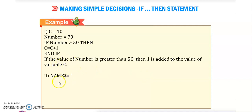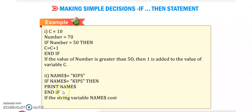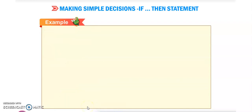This is the remark. Next example: name dollar equals to 'kips'. If name dollar equals to 'kips', then it will print the name variable. The value of name is 'kips', and the string variable name contains 'kips' only, then the print statement will be able to print.